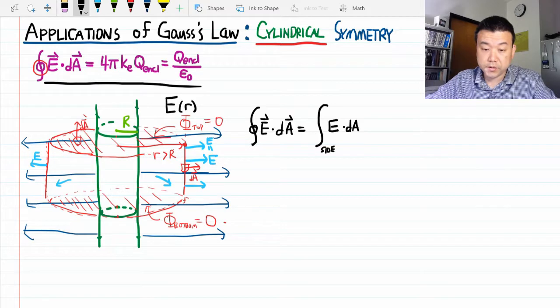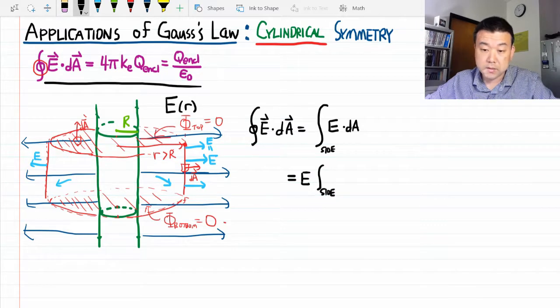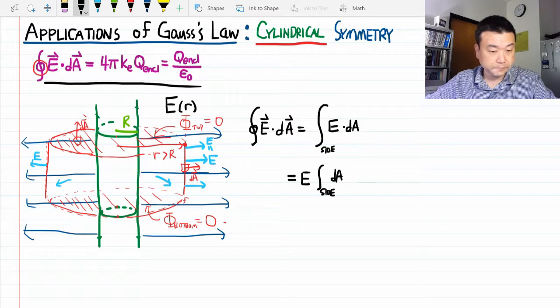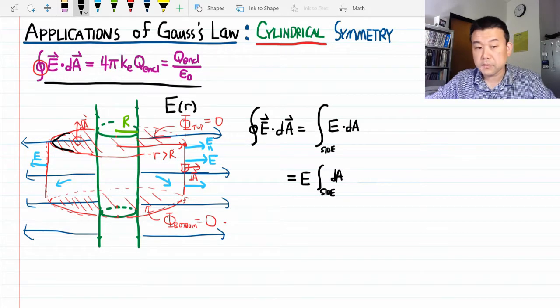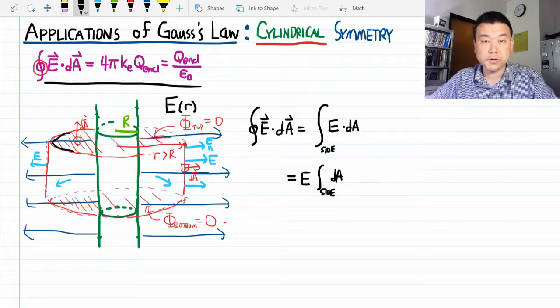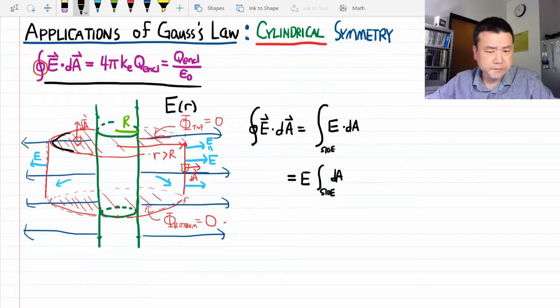We just argued that the electric field is uniform over the surface, so we can pull it out of the integral. The only thing left is the integral over the side surface of the cylinder. I have the circumference, 2πr (lowercase r, since we're looking at the Gaussian surface), times some height h.